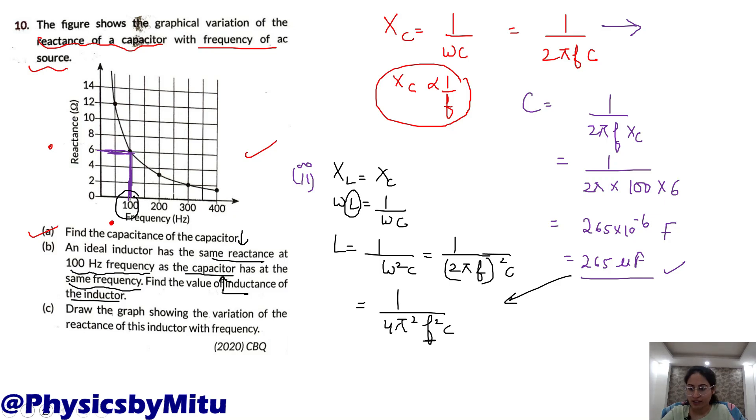And other way is, XL is equal to XC. You can write omega L equals XC. From here, 2 pi f into L is XC. So, L is equal to XC upon 2 pi f.